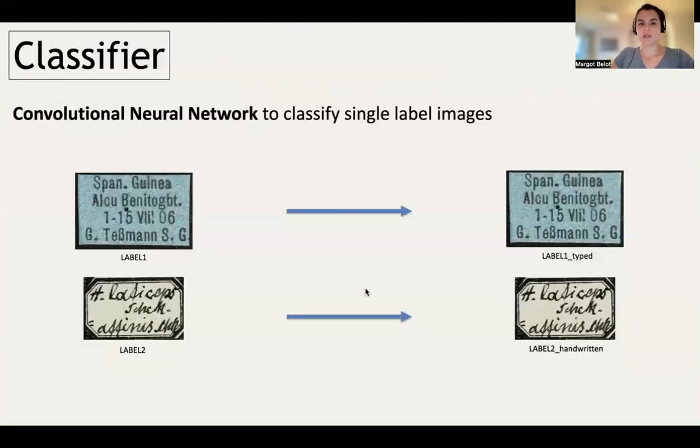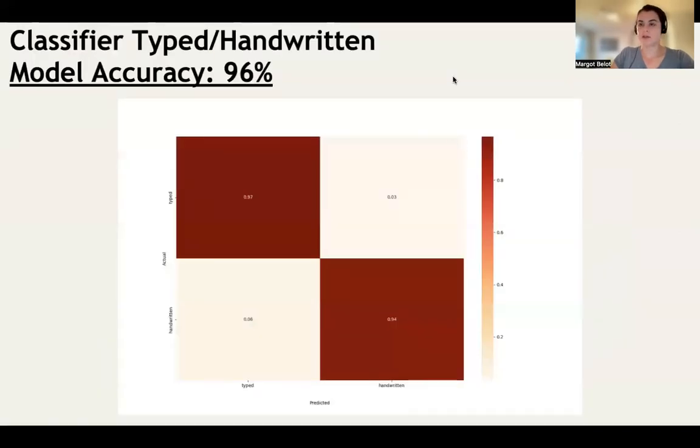When it comes to single label images, we do not need to crop the pictures because they are already cropped, so we use a classifier. The job of the classifier is to classify the single label image as either typed or handwritten. Like the segmentation model, it adds the class at the end of its file name. Our classifier has an accuracy of 96%. Here you have a confusion matrix showing how well the model can predict the class of a label. We can see that it is better at recognizing typed labels. It only misclassified a tiny bit of typed labels as handwritten, and for the handwritten class, it made a bit more mistakes.